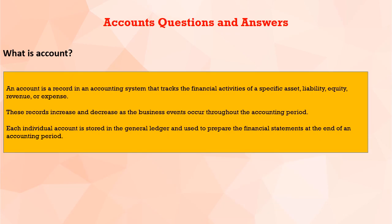An account is the record in an accounting system that tracks the financial activities of specific assets, liabilities, equity, revenue, or expense. When we have a company, we have a tracking of financial activities — assets, liabilities, equity, revenue, expense — and we have a tracking of the record of increases and decreases as business events occur throughout the accounting period.